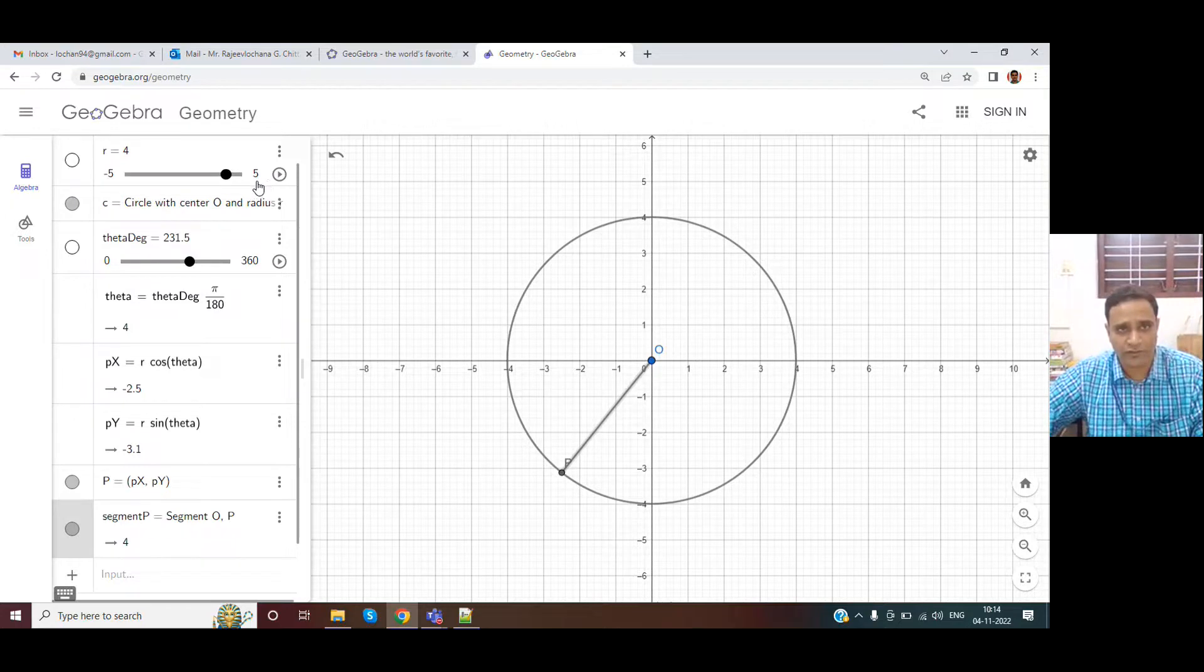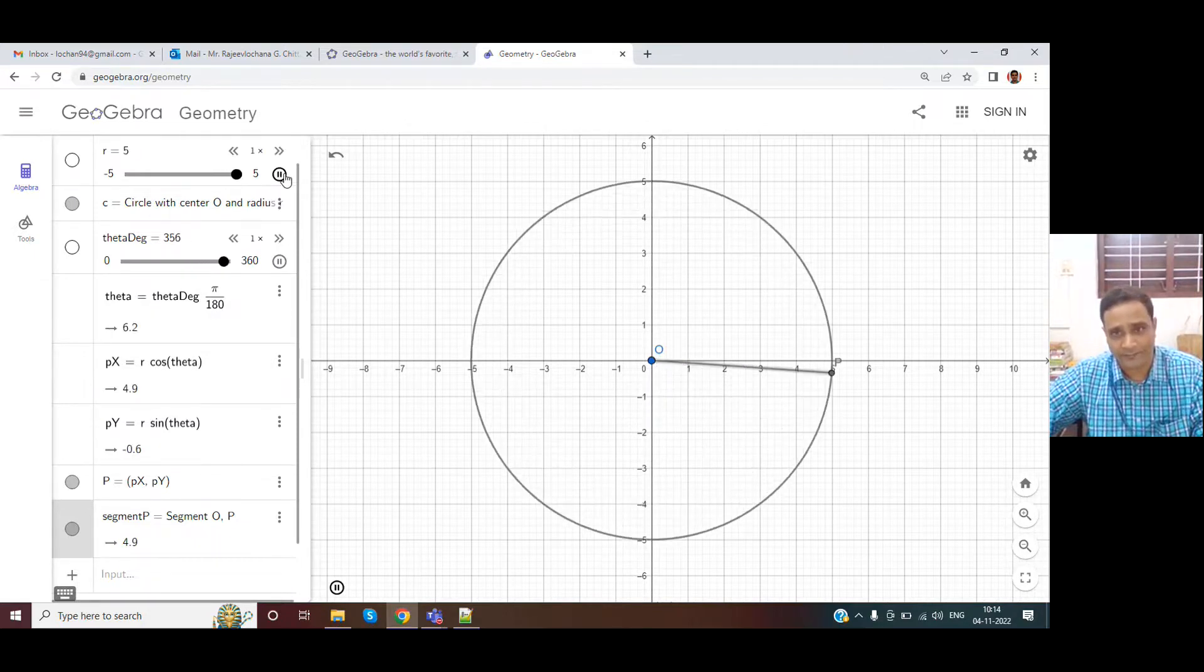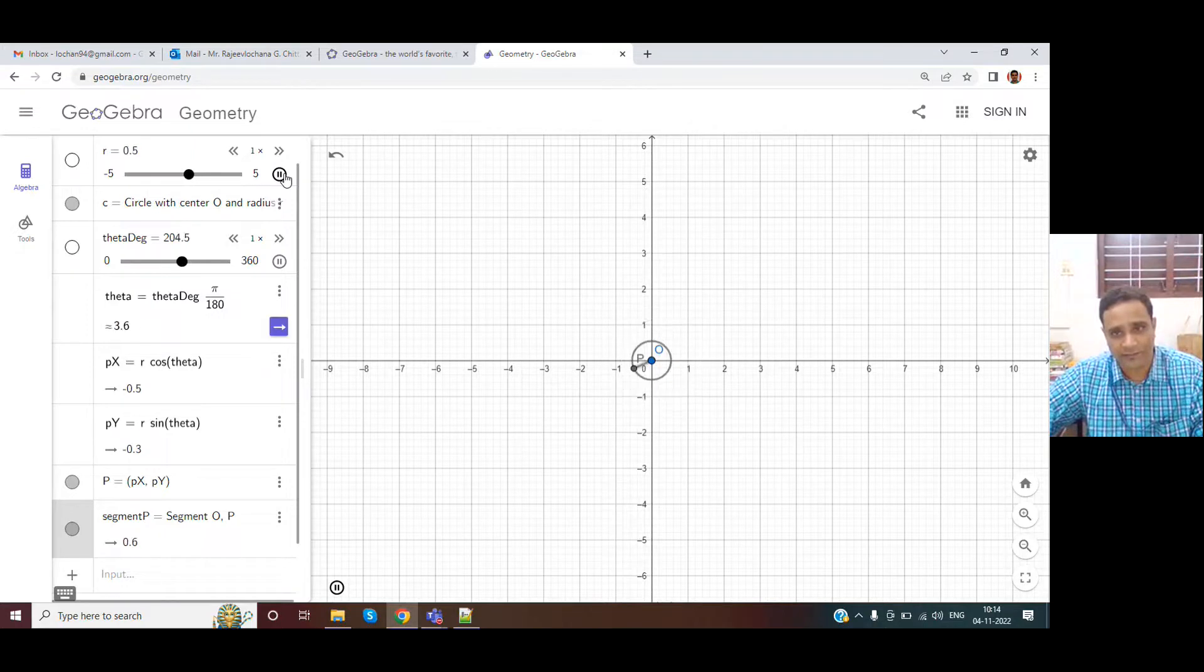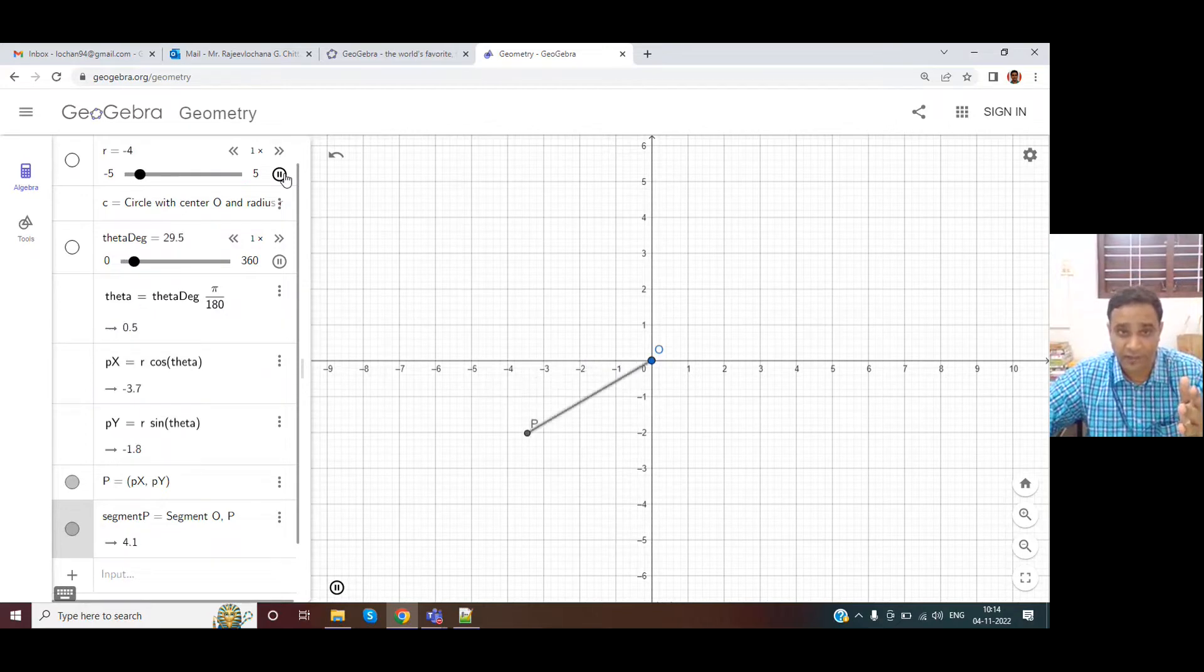Just for the sake of fun, you can have two sliders moving. So one is this. And we can also have the radius slider. What is happening is the radius. Obviously it becomes negative, we'll have an error. So that is why the circle is not getting drawn.